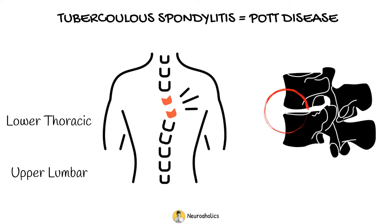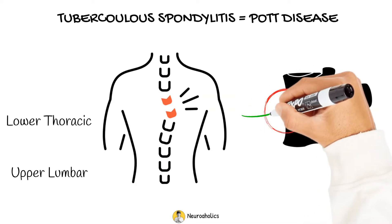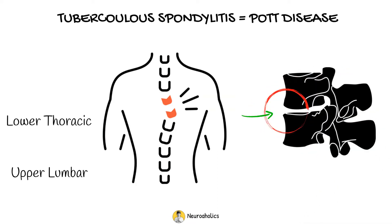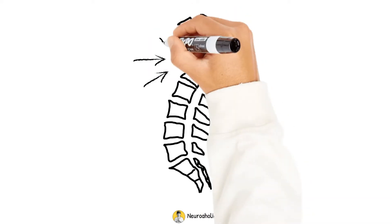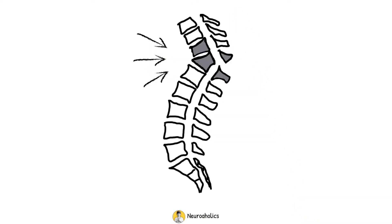In most cases, the infection starts with inflammation of the anterior part of the intervertebral joints and extends behind the anterior ligament to include the adjacent vertebral body. When two adjacent vertebrae are infected, the infection spreads to the adjacent intervertebral disc space. Finally, the avascular disc tissue dies, causing vertebral narrowing and collapsing.